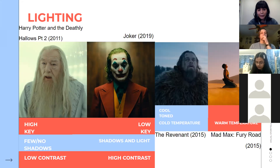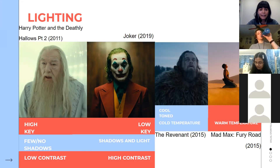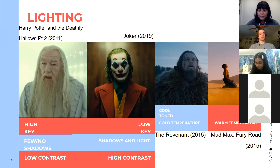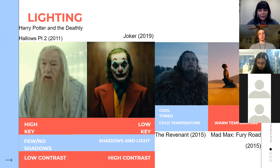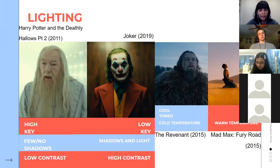Low key lighting conveys darkness in a character or narrative; high key lighting feels more ethereal or 'good' — there are associations with light and dark that can be applied to lighting. Cool tones — blues, greens, purples — create the feel of cold, like in The Revenant. Warm tones — oranges, reds, yellows — give the sense of warmth or heat, as in Mad Max. These are fairly rudimentary guidelines, but you can get really creative with how you use lighting.